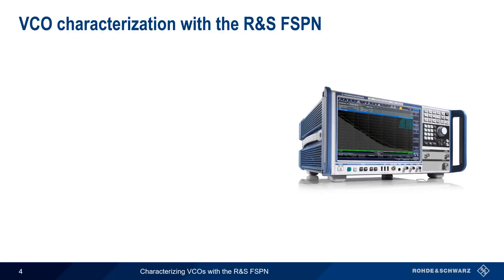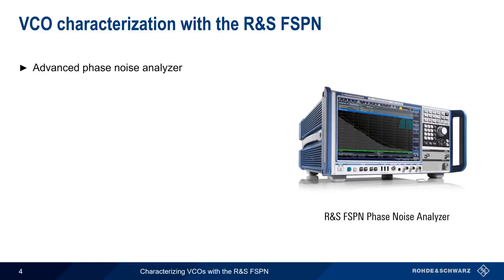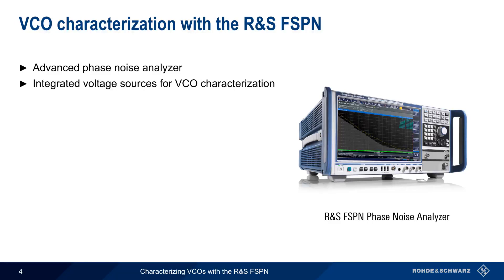One of the most important characteristics of any oscillator is its short-term frequency stability, or phase noise performance. Phase noise analyzers such as the Rohde & Schwarz FSPN are often used for VCO characterization. In order to make these measurements, highly precise and highly stable voltage sources are integrated into the instrument, allowing voltages to be adjusted and the VCO RF output to be measured simultaneously.